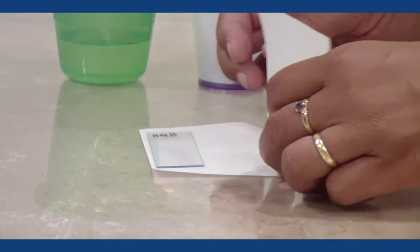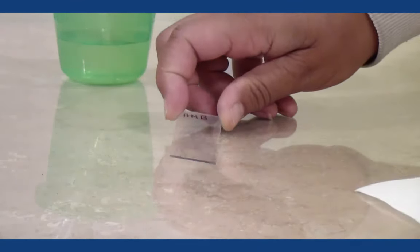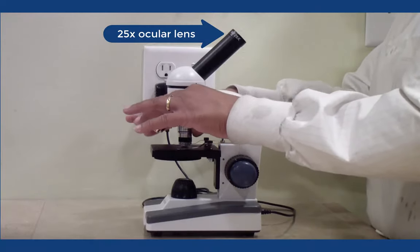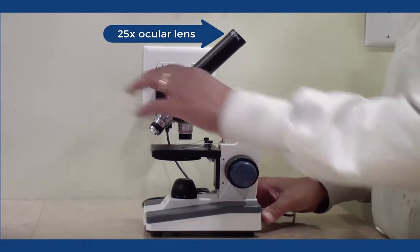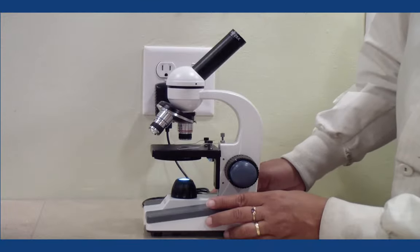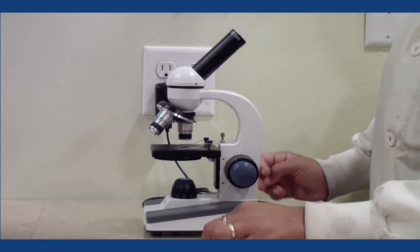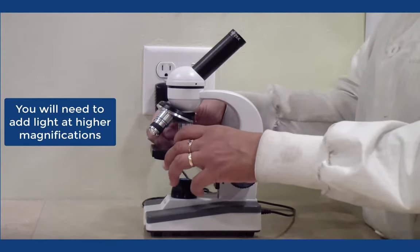Now your slide is ready for observation with the microscope. You will need the 25x ocular lens for this activity. Place the slide on the stage, start with the 4x objective lens and low light, focusing with the coarse focus knob.